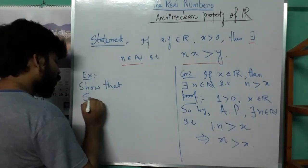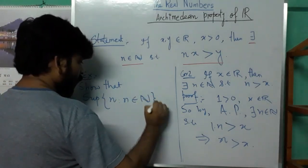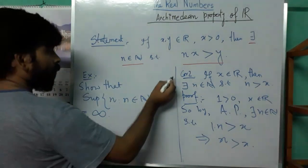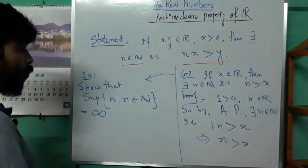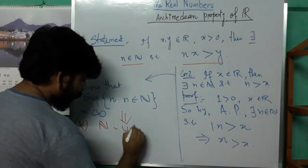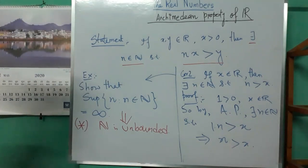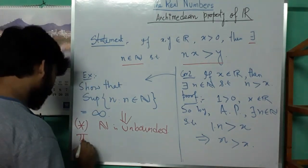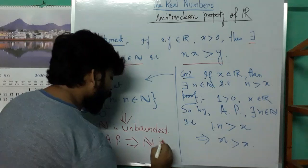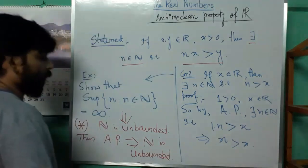Next exercise: show that the supremum of the natural numbers is infinity. This exercise follows from the previous conclusion — natural numbers are unbounded.